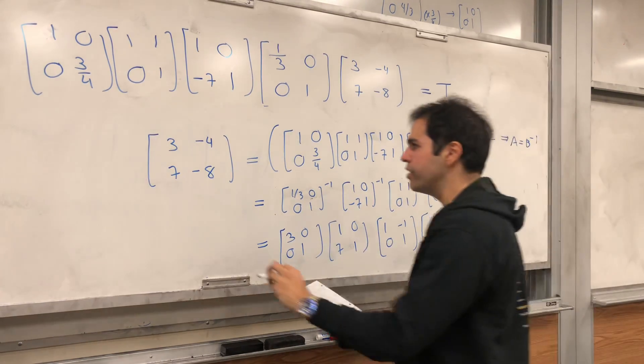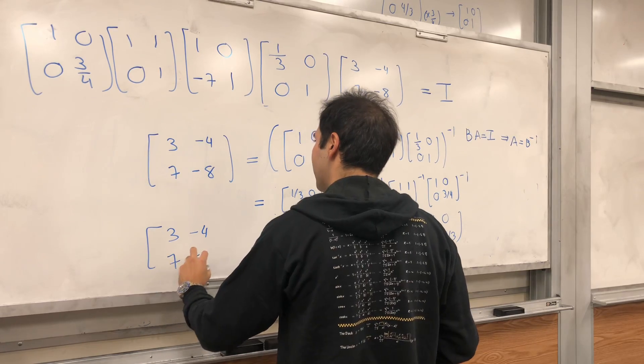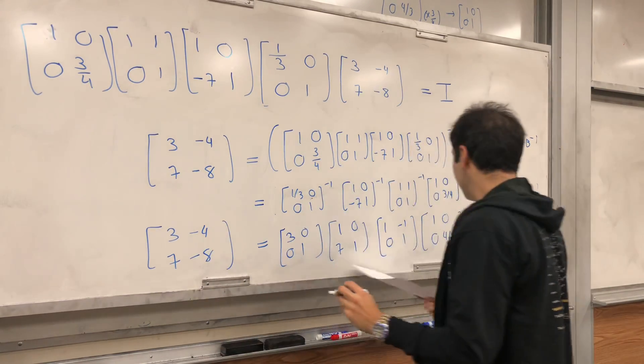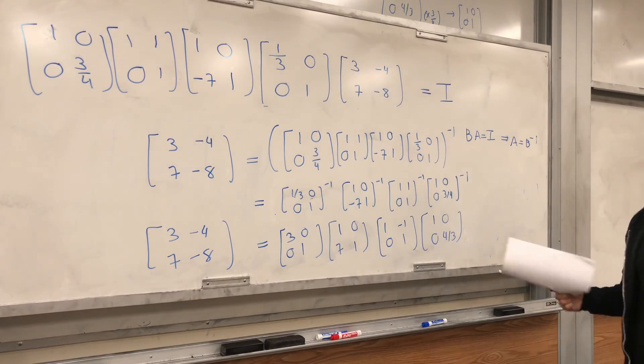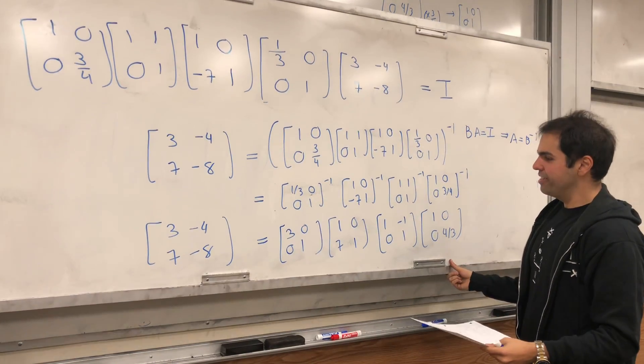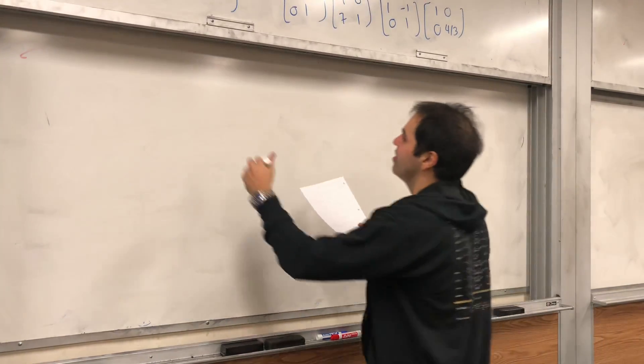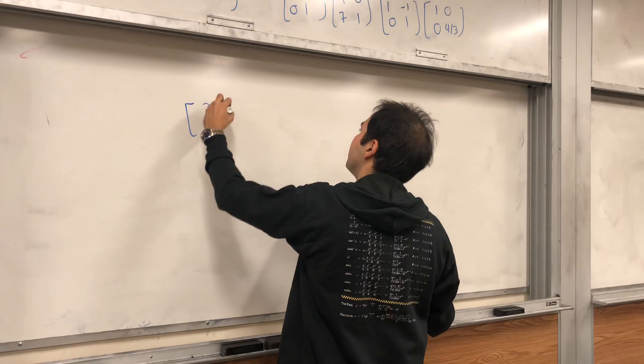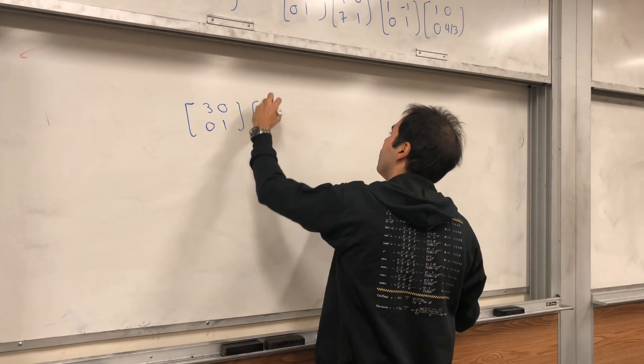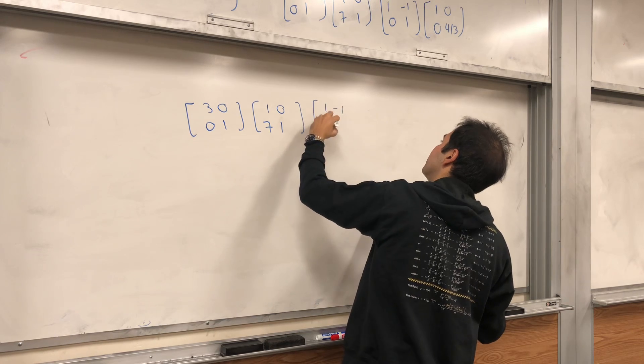And, so, indeed, what have you done? You've written 3 minus 4, 7 minus 8 as what are called products of elementary matrices. And, in case you're skeptical, let me, let's evaluate that product. So, 3, 0, 0, 1, 1, 0, 7, 1. 1 minus 1, 0, 1.